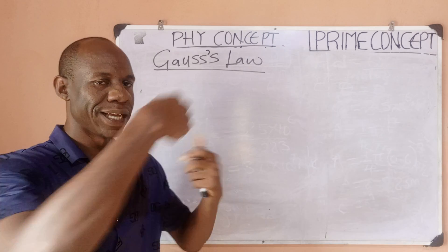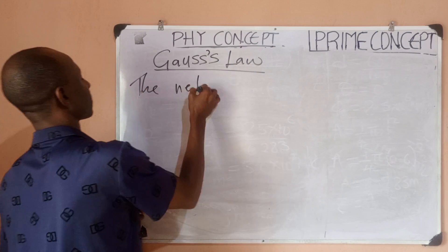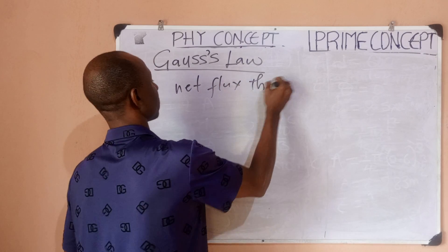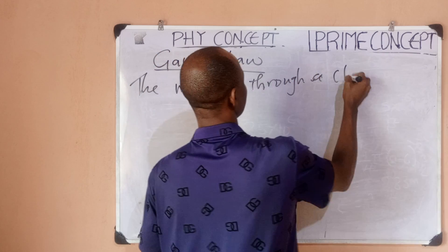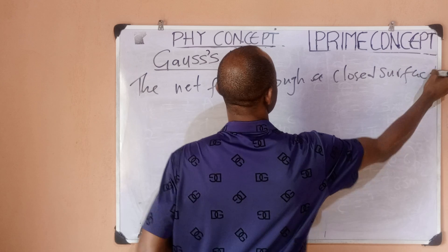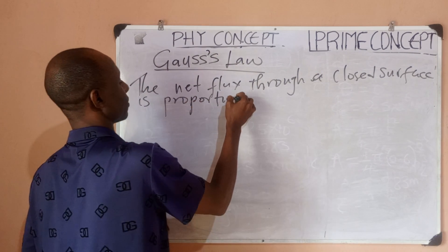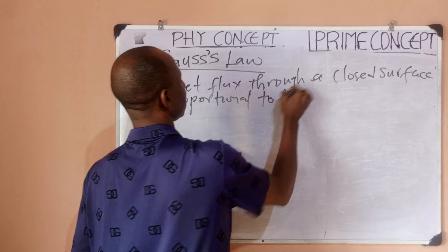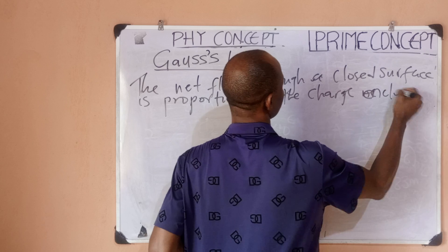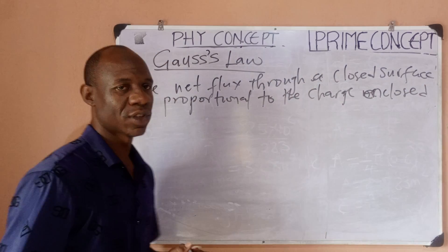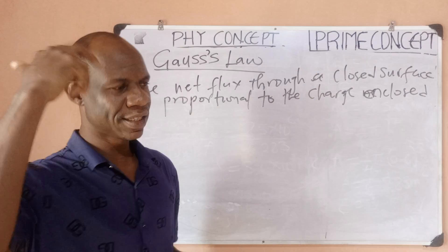The net flux through a closed surface is proportional to the charge enclosed within the surface. So this is Gauss's Law. Now what the law is actually saying, I'll try to illustrate this using a simple illustration.